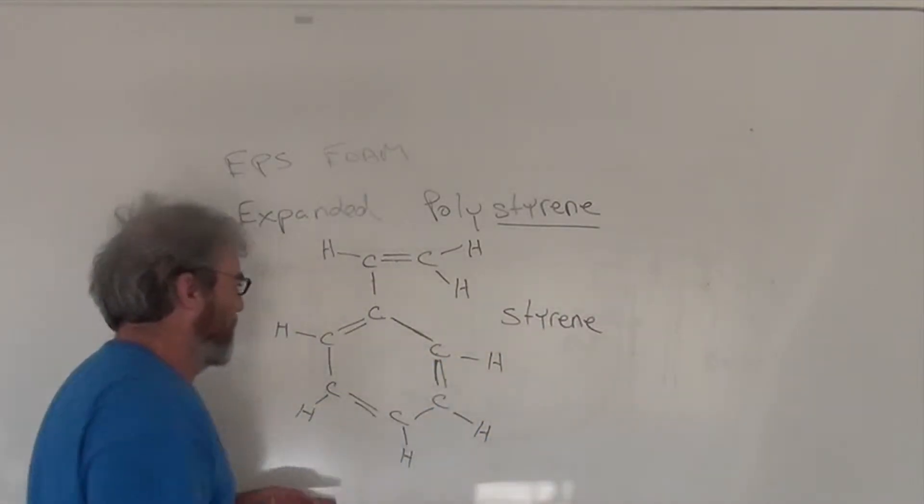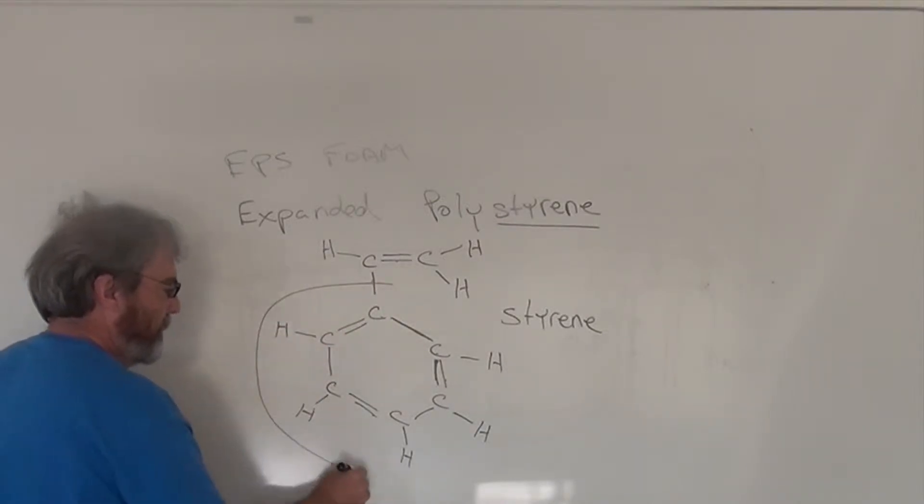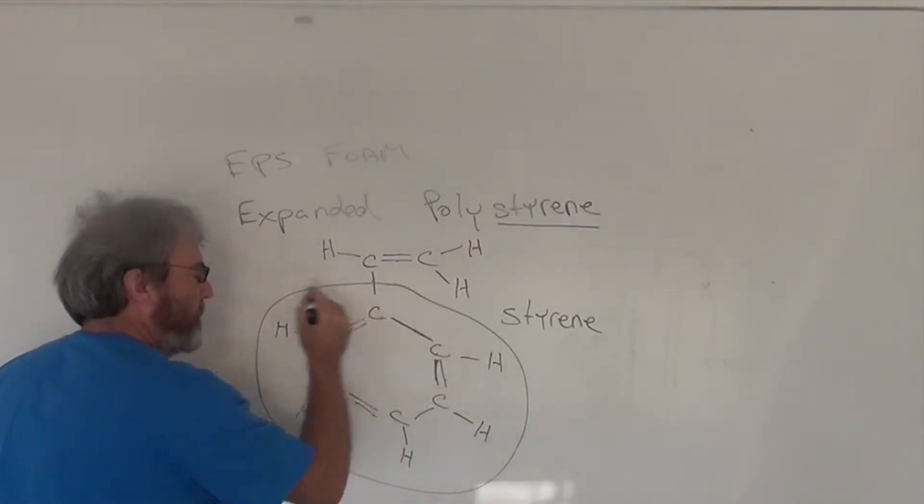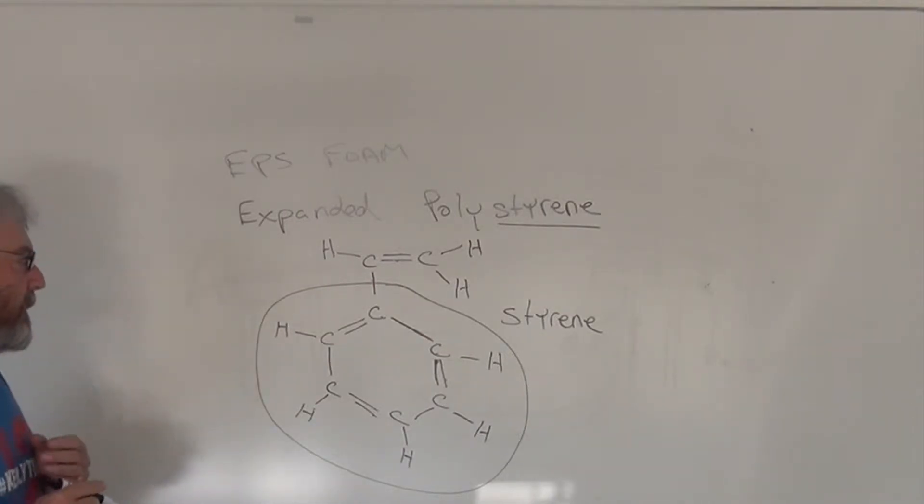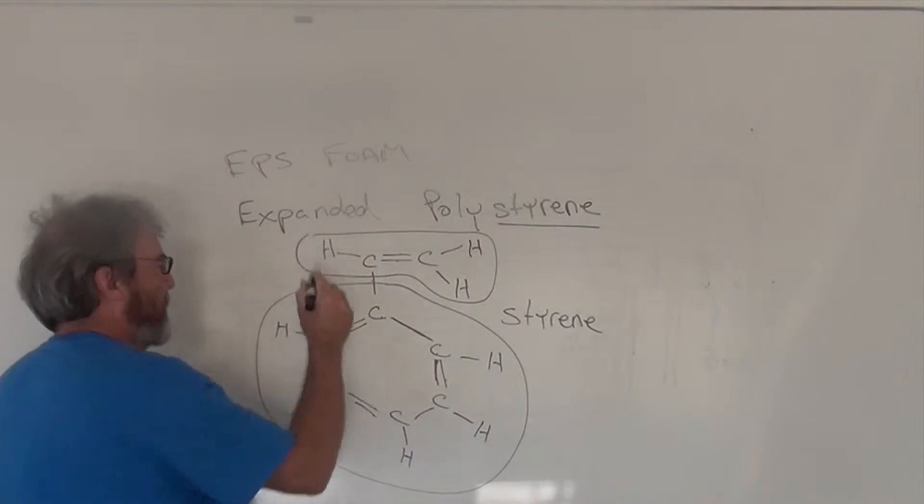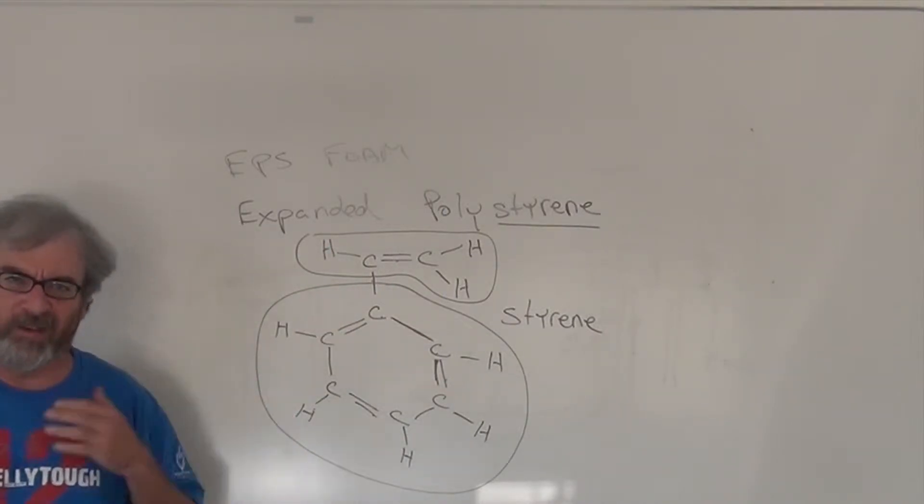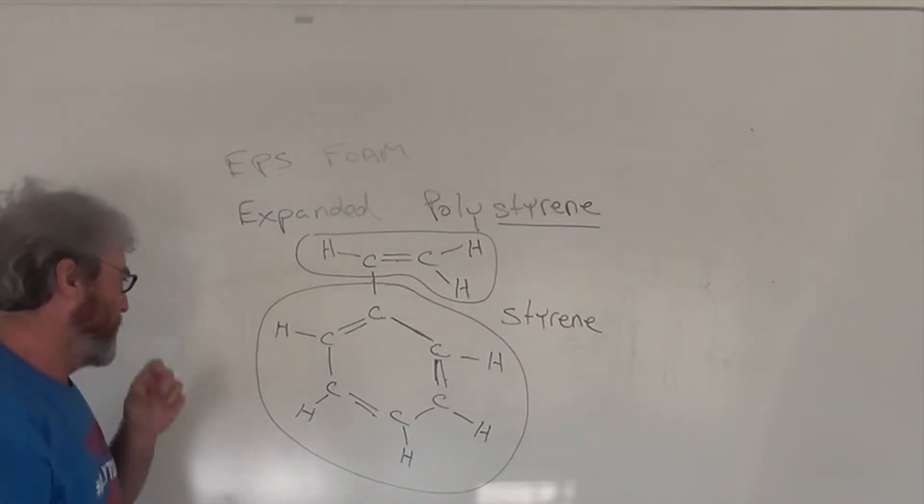And it actually comes from benzene which is this part of the molecule, and ethylene which is this part of the molecule. And ethylene and benzene come from petroleum, like most carbon. So this is styrene.